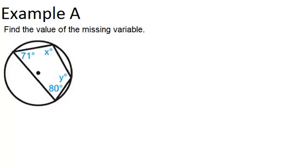What you should notice is that this is an inscribed quadrilateral because all four vertices are on the circle. So the main property of inscribed quadrilaterals is that their opposite angles are supplementary, which means that they add up to 180 degrees.